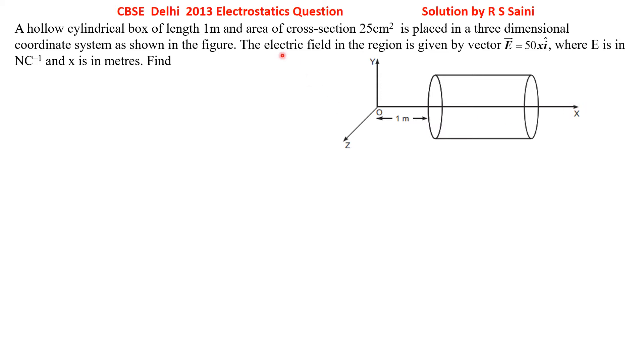The electric field in the region is given by a vector E equal to 50xi cap. i-cap means direction is along positive x-axis. And electric field varies with x-coordinate, that means as x keeps on increasing the strength of the electric field also keeps on increasing.